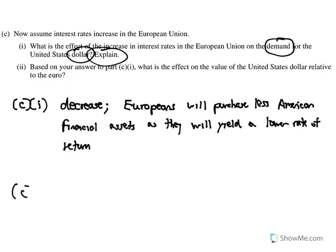In C part ii, it's a follow-up: if there's a decrease in demand for the dollar, then the dollar is going to depreciate in value. You could show that by drawing a supply and demand graph of the foreign exchange market, but you don't have to here — just writing 'depreciate' would be enough. That is all for this video covering question 2 of set 2 of the 2019 AP Macroeconomics free response questions.